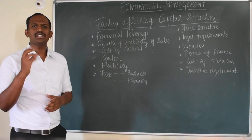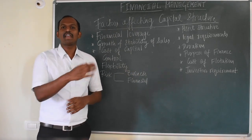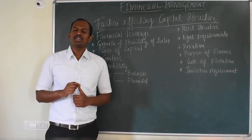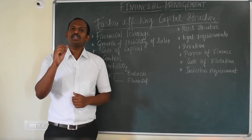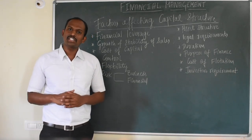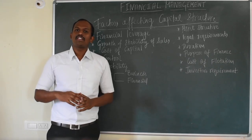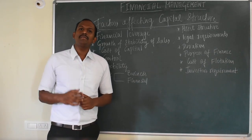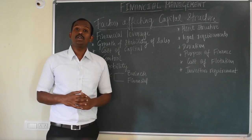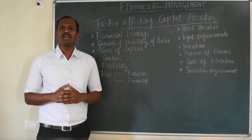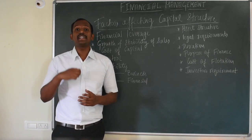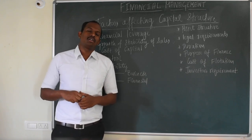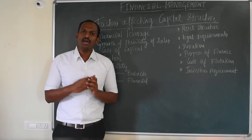The third factor is cost of capital. We have three forms of capital: equity, preference, and debt. The overall cost should always be low. Since the cost of debentures is low, the company needs to plan so that the overall cost of capital is minimized and the value of the firm is maximum. The fourth factor is control — if a company requires additional funds, it must plan so that existing shareholders' interests are not diluted. Raising debt capital can be a strategy to avoid giving external parties entry into management.